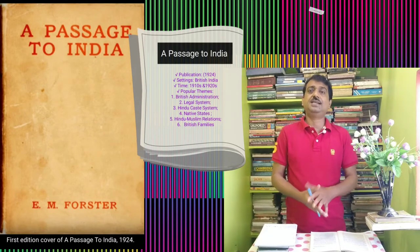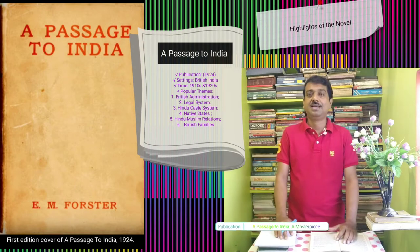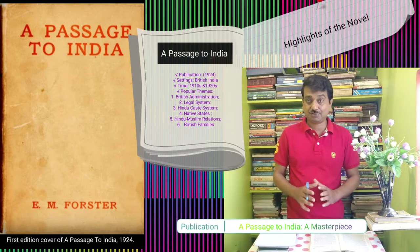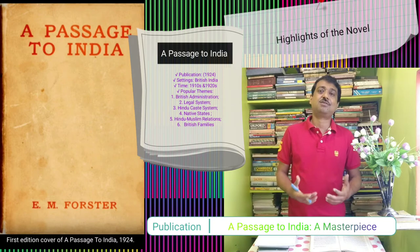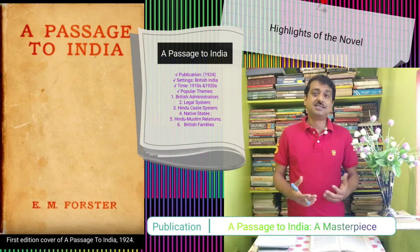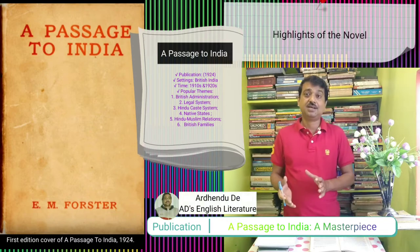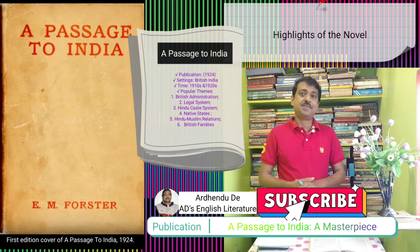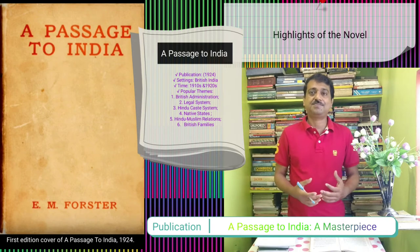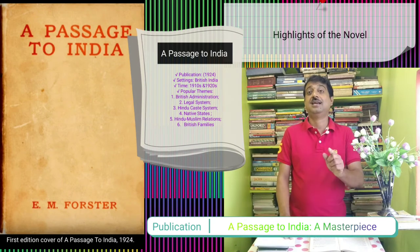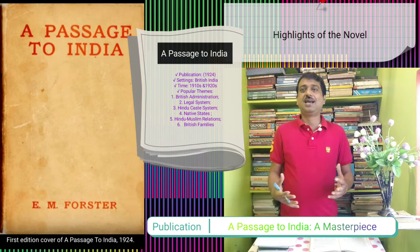A Passage to India is a masterpiece that relates a specific aspect of life in British India in the early 20th century. As a student, you encounter different aspects: the British colonial administration, the legal system, the Hindu caste system, the native states, and the relationship between British India and the Muslim relationship, as well as the everyday life of British families residing in India in the 1920s.